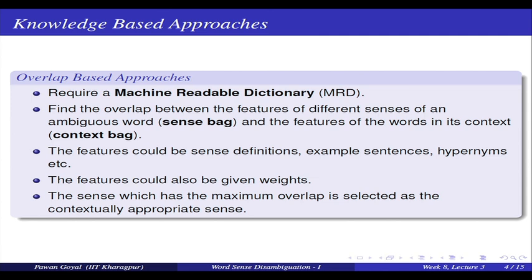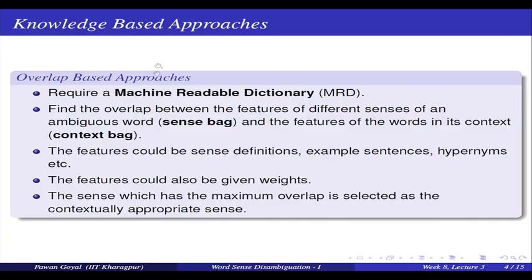By machine-readable, I mean all the entries and information can be easily accessed and used. These approaches try to find the overlap between the features of different senses of an ambiguous word — called the sense bag — and the features of the word in its context — called the context bag — and they measure that overlap. For example, given a sentence containing words w1 to wn, the word wi can be used in two senses. The word wi would be used in only one sense in this sentence, and we want to find out which one.